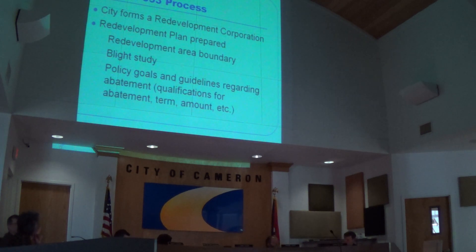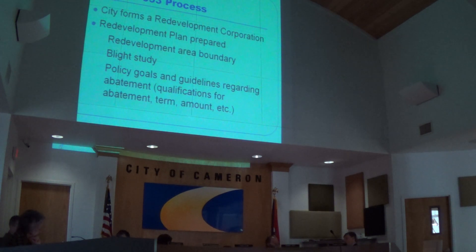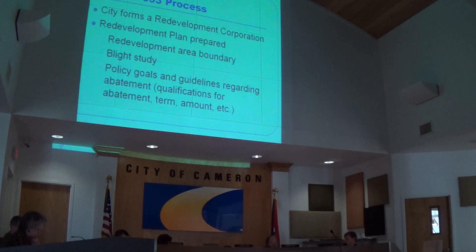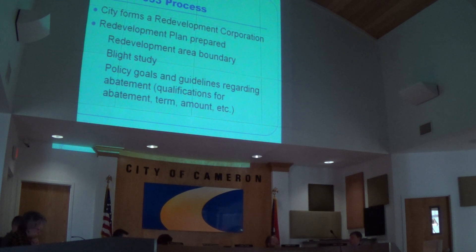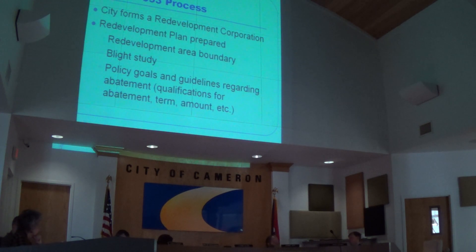Typically you'll see a description of the proposed project. For what the city wants to do, it would be best if there were one or two property owners interested right away so we can describe those projects. Any additional projects added later on will be done by amendment — for example, Amendment 1 to the Cameron Chapter 353 Redevelopment Plan.